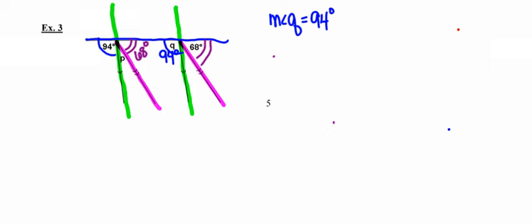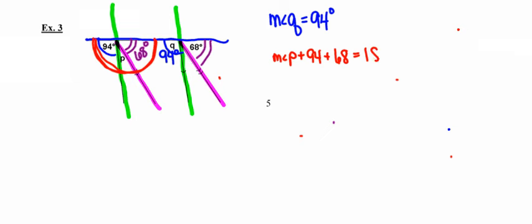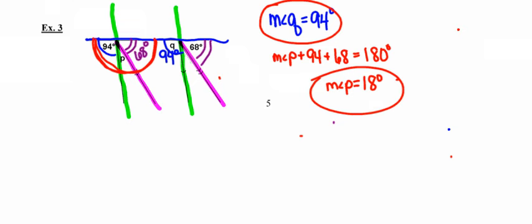That still hasn't helped me find the measure of angle P directly. However, looking at the three angles that together make up that red straight angle, angle P plus 94 degrees plus 68 degrees must total 180 degrees. Therefore, the measure of angle P is equal to 18 degrees. This was another example where I didn't need an auxiliary line. The moral of the story: if you can do it without the auxiliary line, you should.